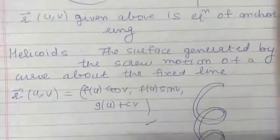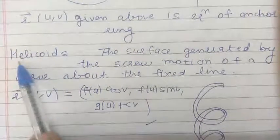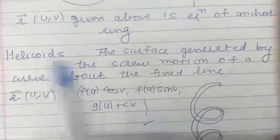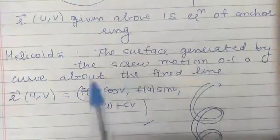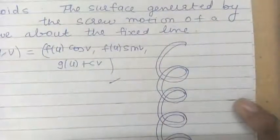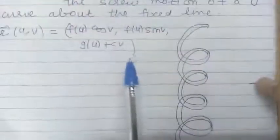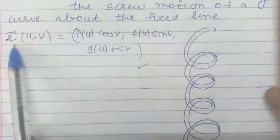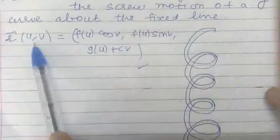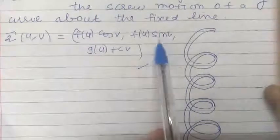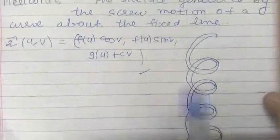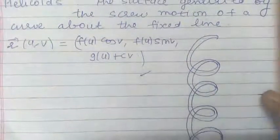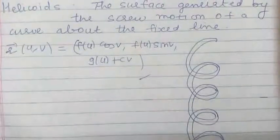Next, the next surface of revolution is helicoid. What is helicoid? Helicoid is a surface generated by the screw motion of a curve about a fixed line. Here, we have shown this curve — that is a helicoid — and the position vector of the current point on this helicoid has coordinates (f(u)cos v, f(u)sin v, g(u) + cv). You will have to keep in mind the coordinates of a point on each of the surfaces of revolution.